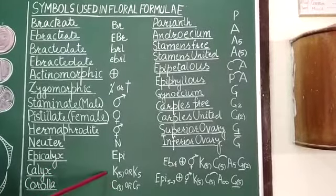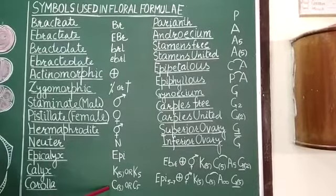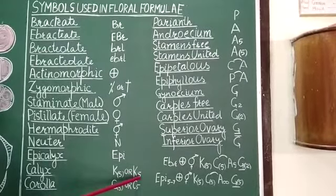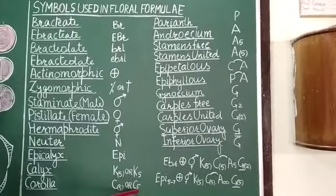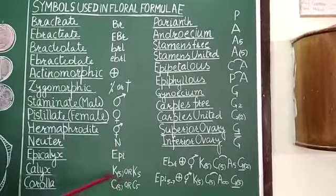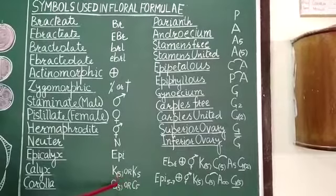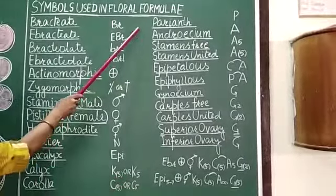If the calyx or corolla, meaning if the sepals or petals are free, they are written by the number only as subscript. But if they are fused, the number is enclosed within brackets. Next is perianth.